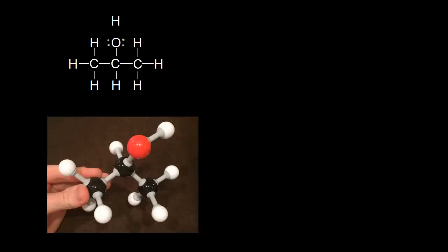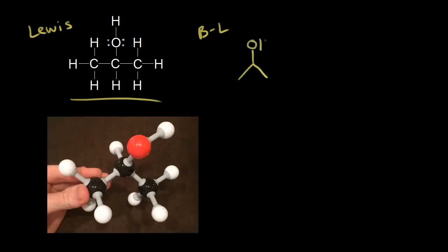In the video on bond line structures, we started with this Lewis dot structure on the left, and I showed you how to turn this Lewis dot structure into a bond line structure. Bond line structures contain the same information as a Lewis dot structure, but it's obviously much easier and much faster to draw the bond line structure on the right than the full Lewis dot structure on the left.